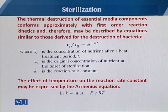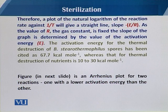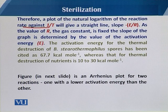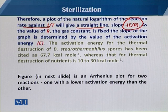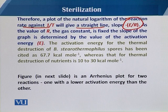This equation shows the effect of temperature on the rate of reaction, which we call the thermal destruction rate. If we plot the natural logarithm of the reaction rate constant against the reciprocal of the temperature, we get a straight line whose slope is equal to minus E over R. Since R is the gas constant and is fixed, the slope of the graph is determined by the value of the activation energy.